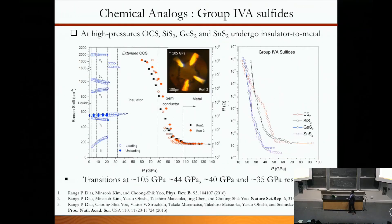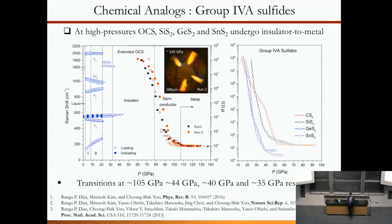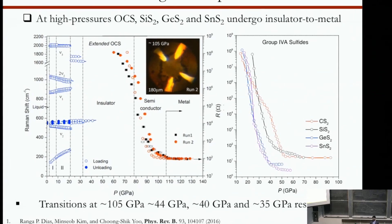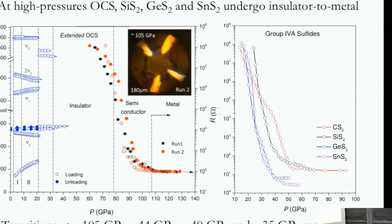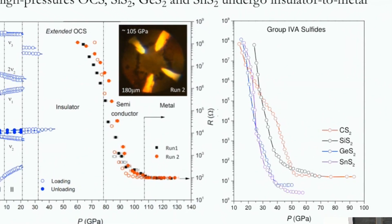This is an interesting sample to study, and we want to see the systematic behavior. So we studied not just carbon disulfide, we studied silicon disulfide, germanium disulfide, all the group four and six sulfides.